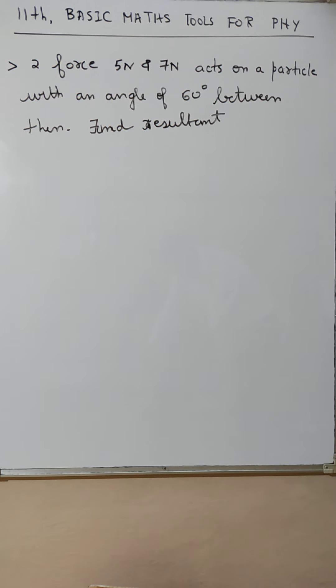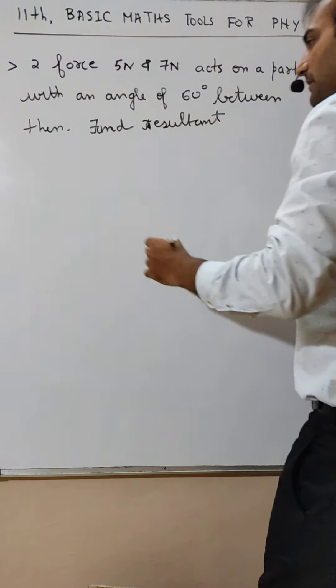Let me see. Who does it fast? Brahma, root 109. It's perfect. Thank you. Okay, resultant is given by.